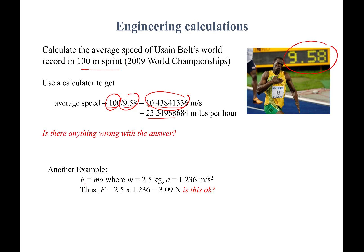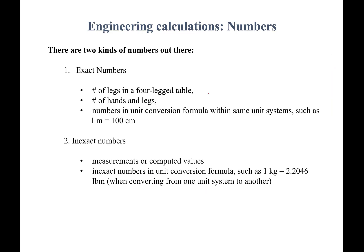Here is another example: we want to compute the force applied on an object given mass m and acceleration. The mass is 2.5 kilograms and the acceleration is 1.23 meters per second squared. Plugging these into F = ma and multiplying gives 3.09 newtons. The question is: is this the right way to write the answer? We'll find that out as well.